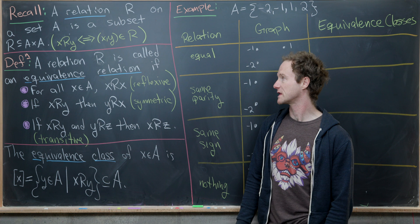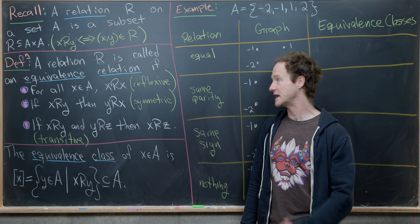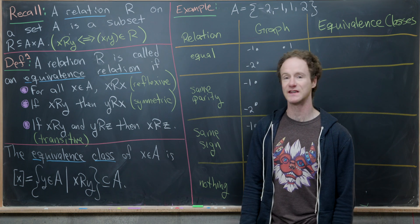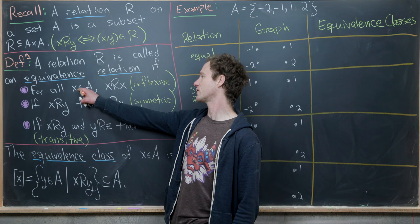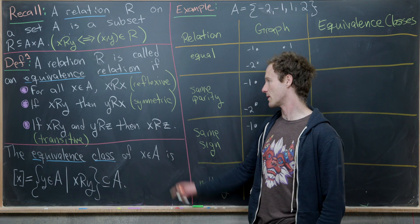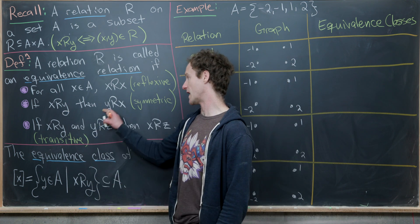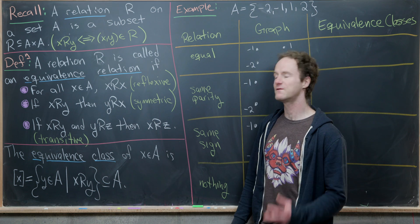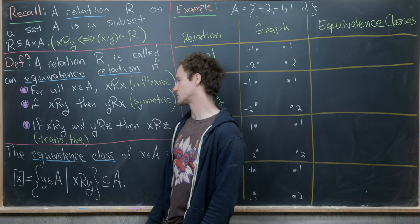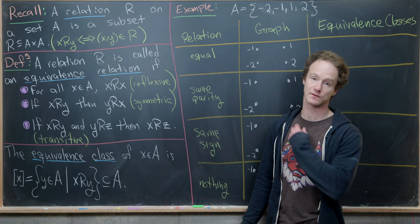We call a relation an equivalence relation if it satisfies three additional properties. The first property is reflexivity: every element is related to itself. The second is symmetry: if x is related to y, then y is related to x. Finally, the transitive property says that if x is related to y and y is related to z, then x is related to z.